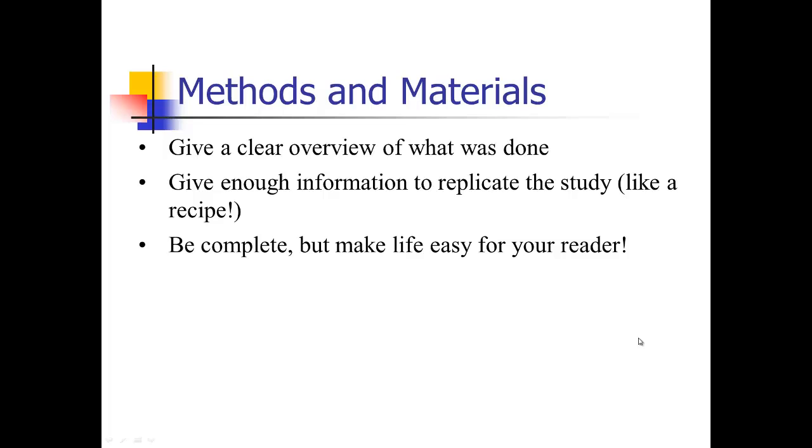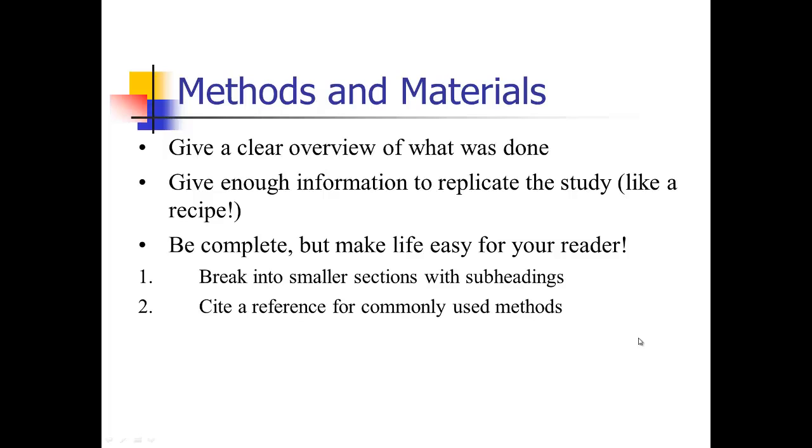You want to be complete in your methods and materials section. You want to give enough information that somebody can replicate your study, but try to minimize the complexity. Try to make life as easy as possible for your reader. Break your results section into smaller sections with subheadings. Cite a reference for commonly used methods rather than going into all the details. Wherever possible, display methods information in a flow diagram or even a table. There are a lot of things in the methods and materials that are better presented as a table or a flow diagram rather than as text.